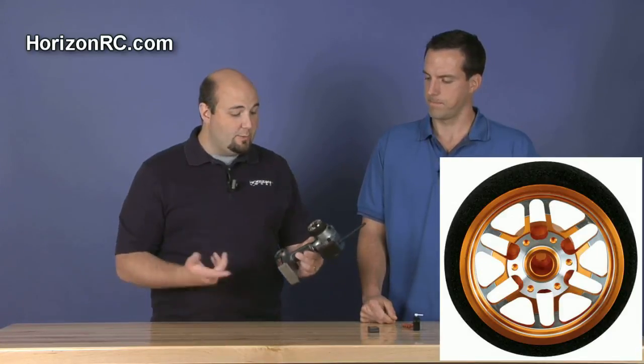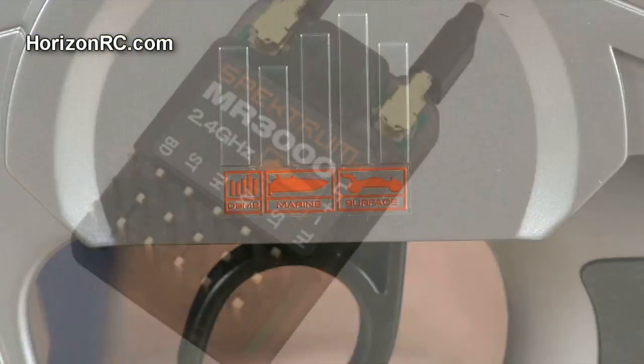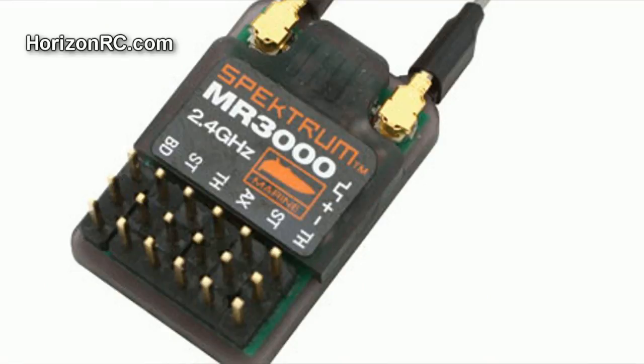Now one thing too that we've had as of late is the MR3000 marine receiver. Is this marine compatible? Absolutely, it sure is. Oh, that's cool. Yep, it works with the MR3000 marine receiver plus DSM2 receivers, just like the new DX3S's.